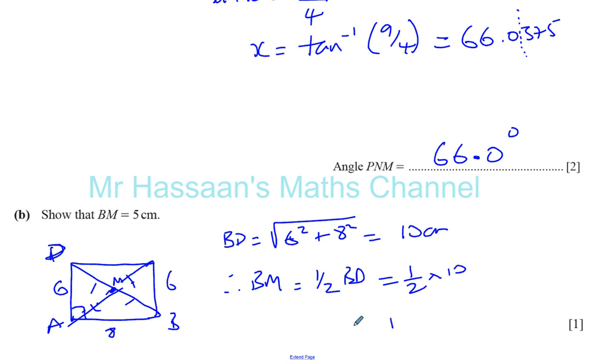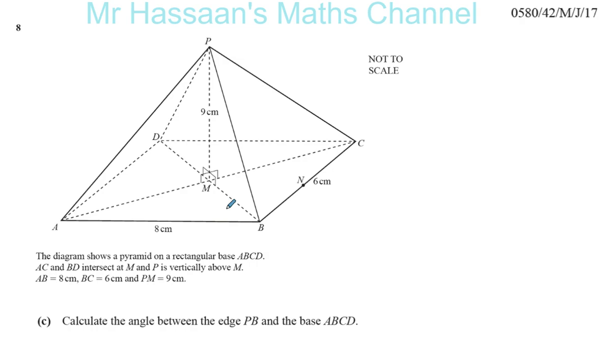So therefore, you can say BM is equal to five centimeters. Okay, I could have done that with part A, actually. Anyway, so I'm going to go to part C now, which is over here.